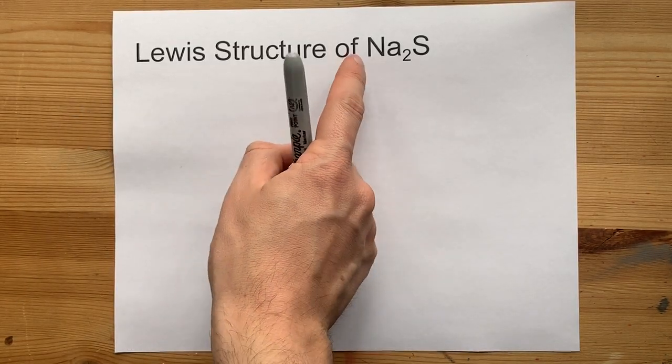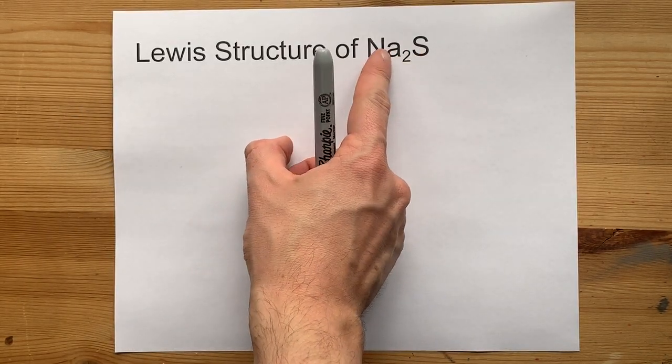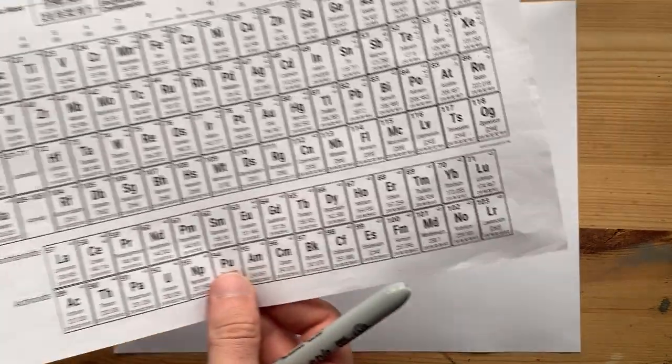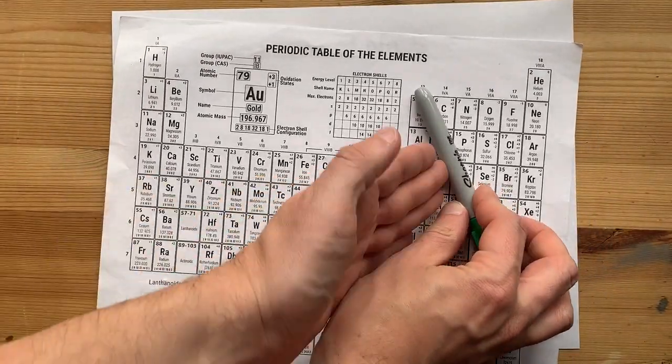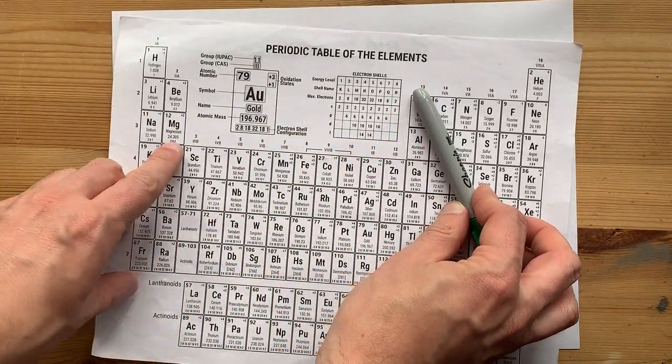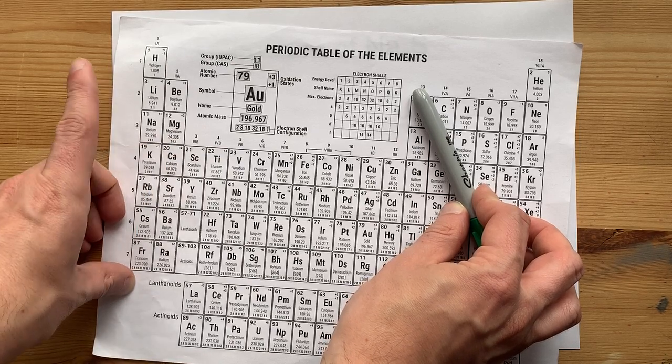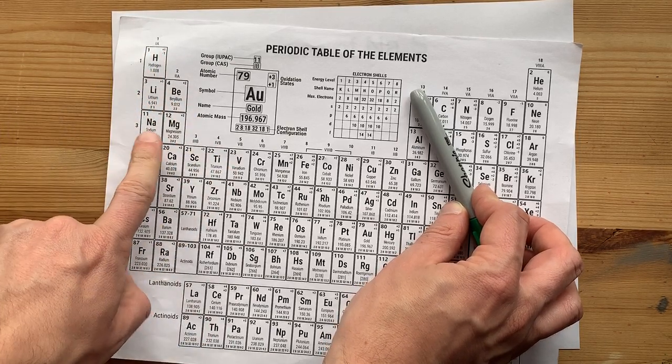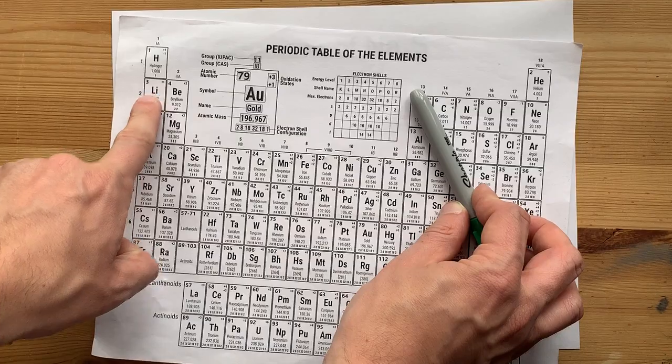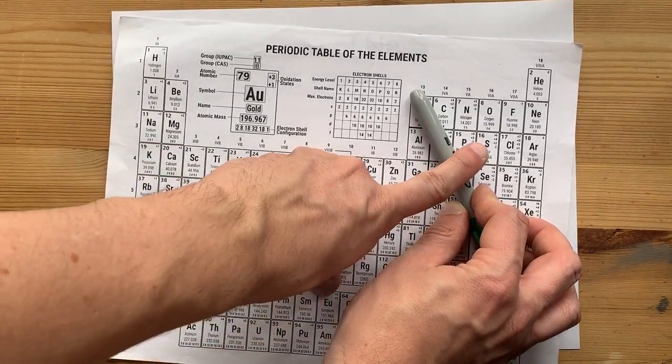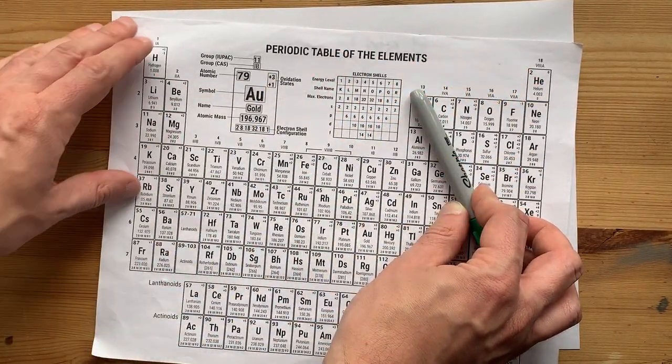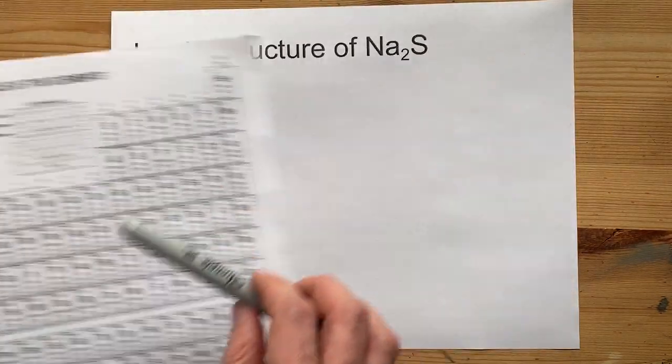Let's draw the Lewis structure of sodium sulfide, Na₂S. Now, sodium comes from the left side of the periodic table. That means it's a metal. I know hydrogen is an exception to that rule, but sodium is definitely an alkali metal. And sulfur is a non-metal. It comes from the right-hand side of the staircase on your periodic table.